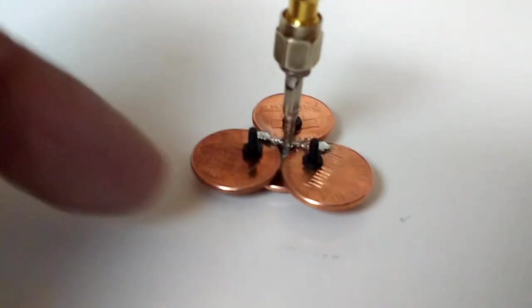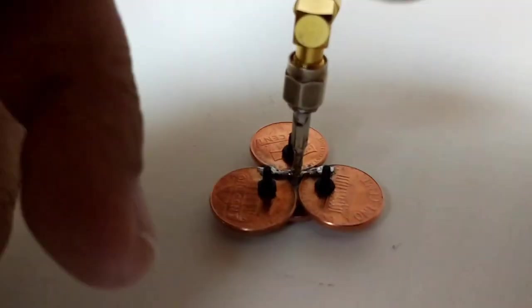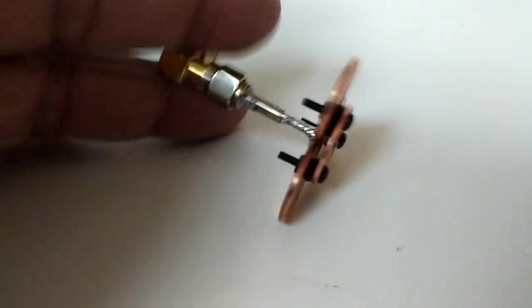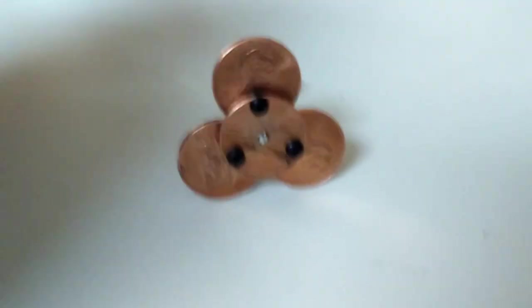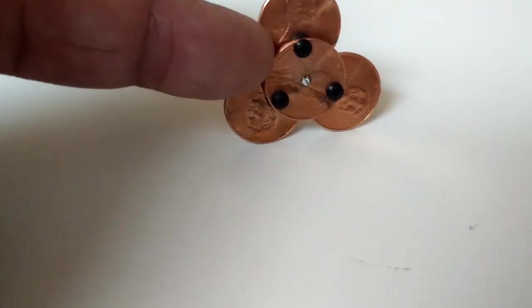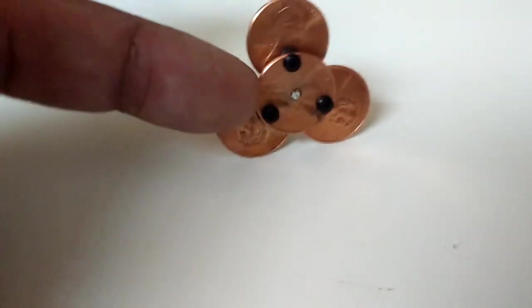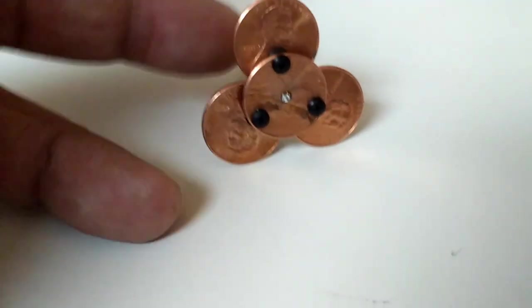Once that was done, that created my grounding plane or my reflector. And then I went ahead and I drilled a center hole on the top penny here. I did that on the lathe just to be precise and concentric.